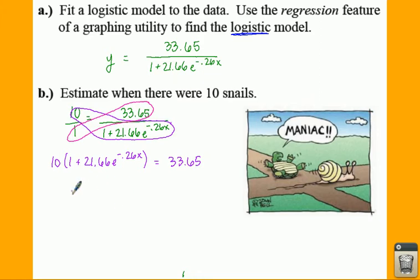We can distribute the 10 through here if you like. You could either divide by 10. I'm going to divide by 10 on both sides because really if you divide by 10, that's only moving your decimal. So if you're dividing by 10, that's going to make this 33.65 a 3.365, and you have 1 plus this equals 3.365, and then we're going to subtract 1.